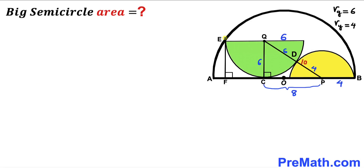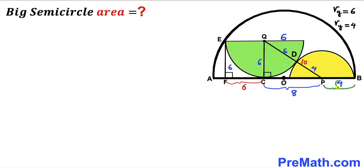In the next step, I drop a perpendicular EF onto line AB. We observe that EF equals QC, so EF = 6 cm. Also, EQ is the radius of the green semicircle, so EQ = 6. Likewise, FC = 6 cm. We can also see that segment PB = 4 cm, CP = 8, and FC = 6. Our task now is to calculate the tiny segment AF.